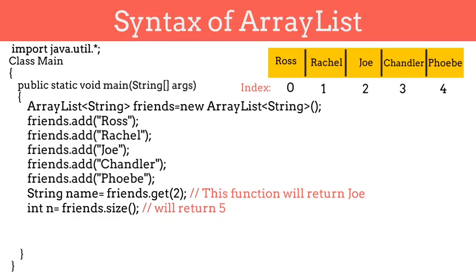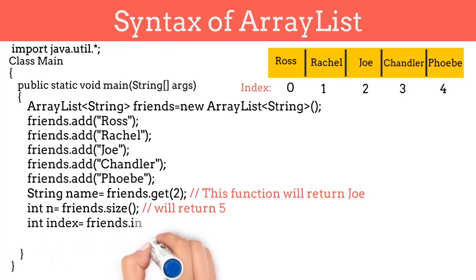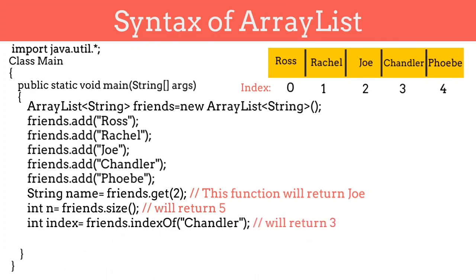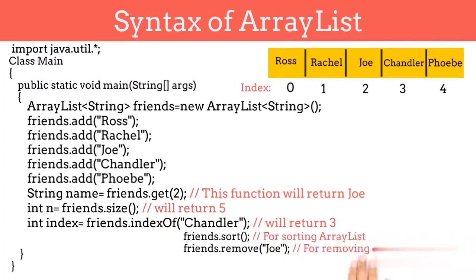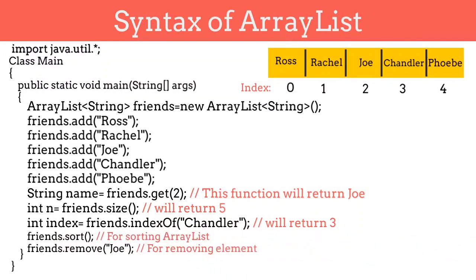If you want to get the index of any element in an ArrayList, then we can use the indexOf function and pass the element to it. Means if I want to know at what index Chandler is saved, then I will use friends.indexOf(Chandler). This statement will return 3, which is the index of Chandler. And if the element is not present, then the indexOf function will return minus 1. So indexOf is also used for searching an element. Similarly, you can perform a lot of operations on an ArrayList, like sorting, removing elements, etc. You can see the syntax on the screen.